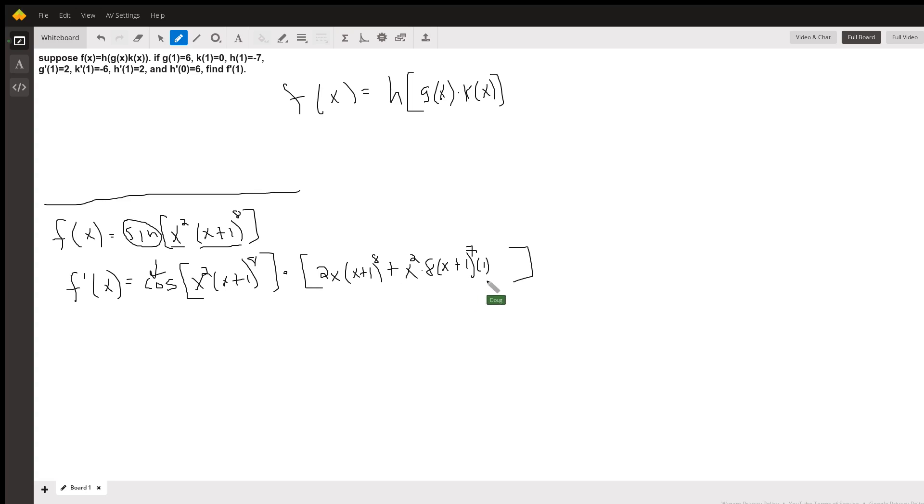Here's an example of using the chain rule. This is a product of two functions. I don't want to bother raising x plus 1 to the 8th power—I'd get 9 terms and then distribute the x squared. So I'm going to use the product rule: the derivative of the first function times the second function plus the first function times the derivative of the second.